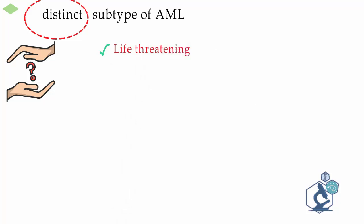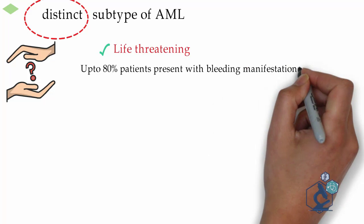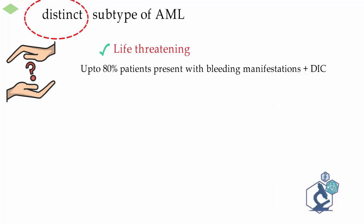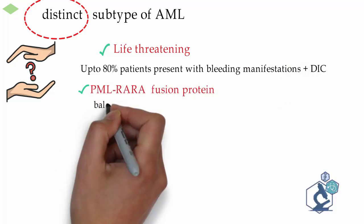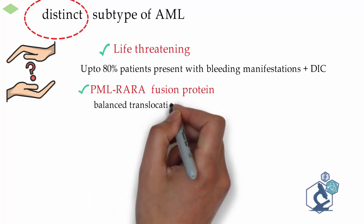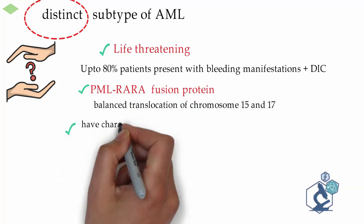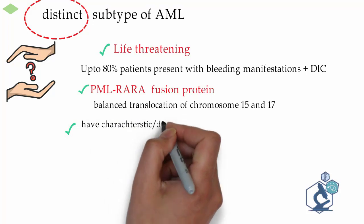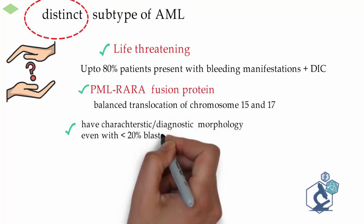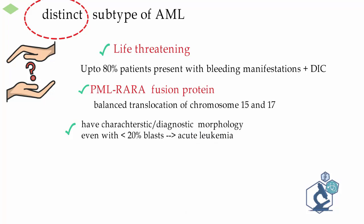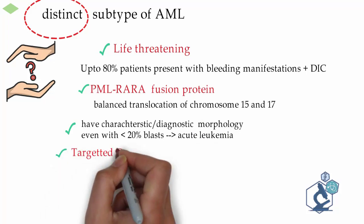Why is so much importance given to APML? Firstly, its clinical manifestations are life-threatening — up to 80% of patients present with bleeding manifestations and DIC. It is characterized by PML-RARA fusion, formed due to balanced translocation of chromosomes 15 and 17. It has a characteristic and diagnostic morphology, and is one of the leukemias where a blast percentage of 20% is not required for diagnosis.